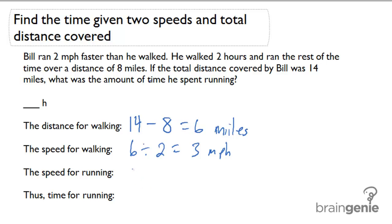His running speed, therefore, was two miles faster, so it's three plus two equals five miles per hour.